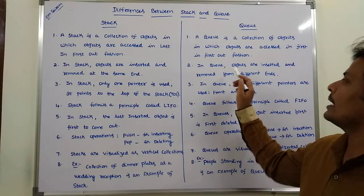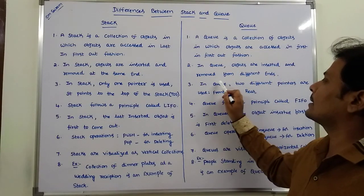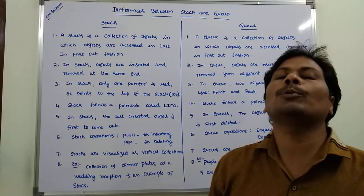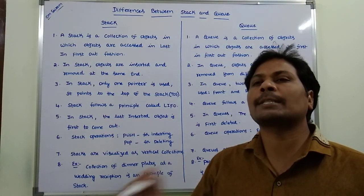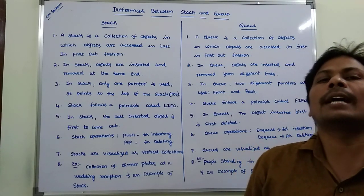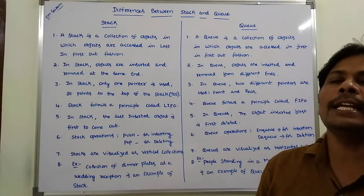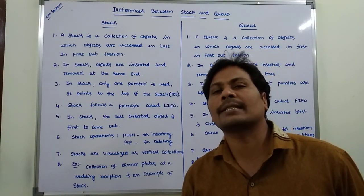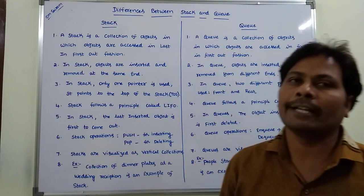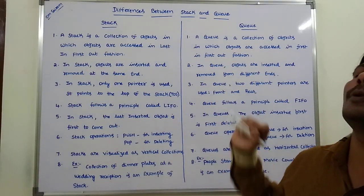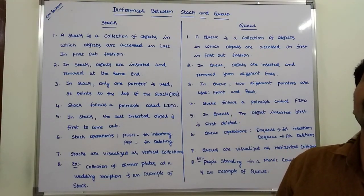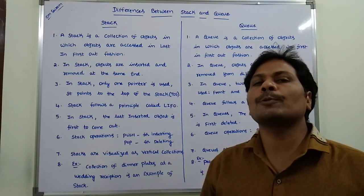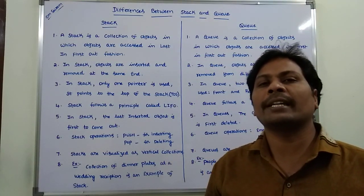In queue, objects are inserted and removed from different ends. Insertion can take place at one end, called the rear end. Deletion can take place at the other end, called the front end. So, in a queue there are two ends: front end and rear end. The rear end is used for inserting an element into the queue.